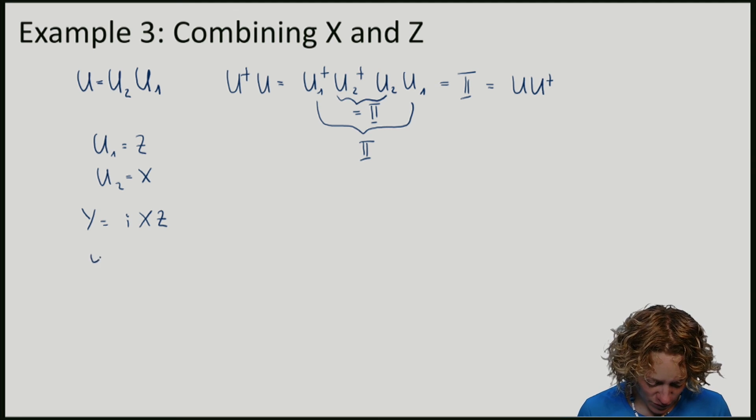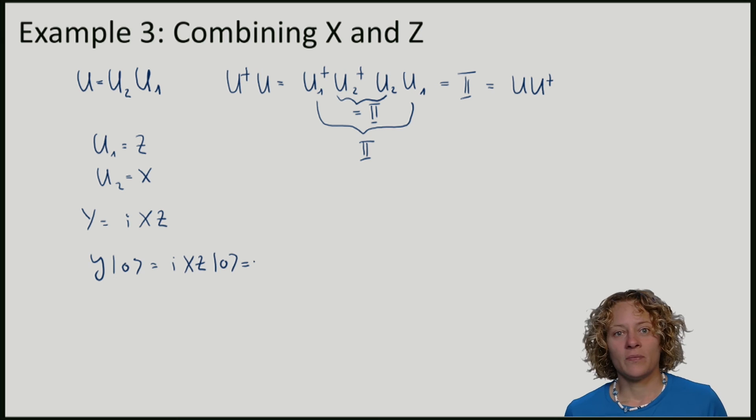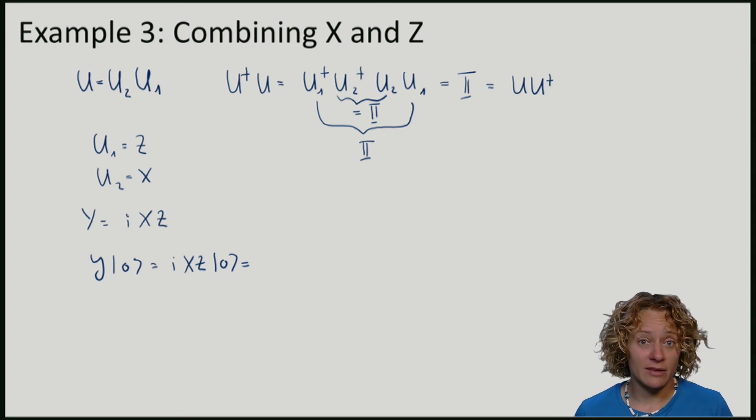So if I compute this, Y applied to zero, Z will do exactly nothing to the zero, while X flips the bit.